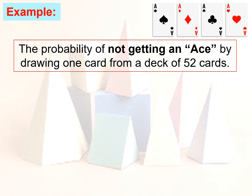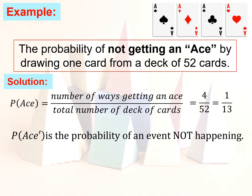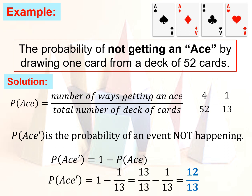The probability of not getting an ace by drawing one card from a deck of 52 cards. How many aces do we have in a deck of cards? We have 4. So the probability of getting an ace is 4 over 52, which equals 1 over 13, dividing both numerator and denominator by 4. The probability of not getting an ace is 1 minus 1 over 13, which equals 13 over 13 minus 1 over 13, equals 12 over 13. Note: we sometimes use a prime notation to indicate the complement, or the probability of an event not happening.